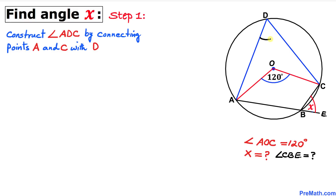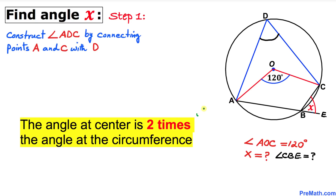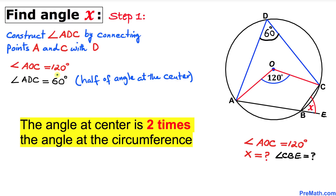Let's focus on angle ADC. We recall the fact that the angle at the center is two times the angle at the circumference. Angle AOC is at the center and angle ADC is at the circumference, so angle ADC is half of 120 degrees, which turns out to be 60 degrees.